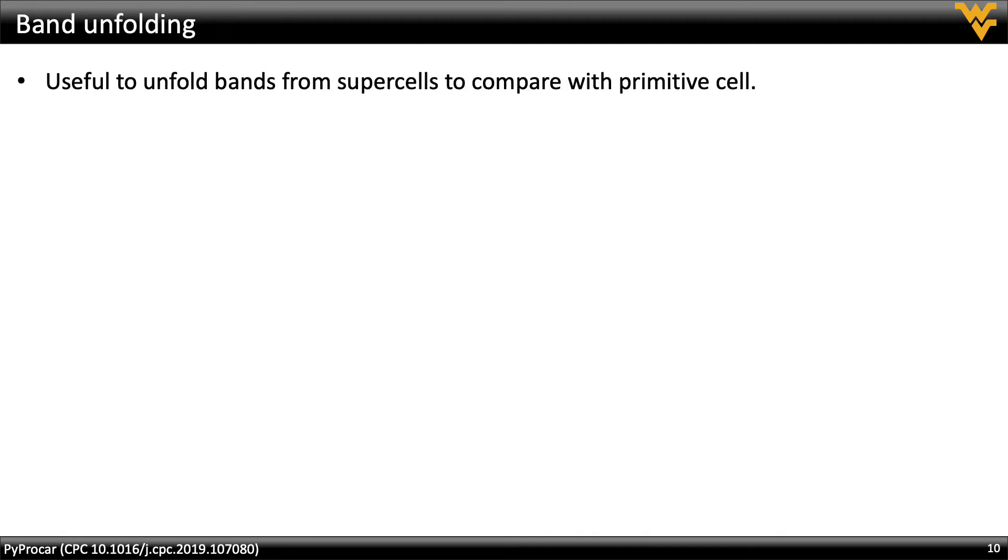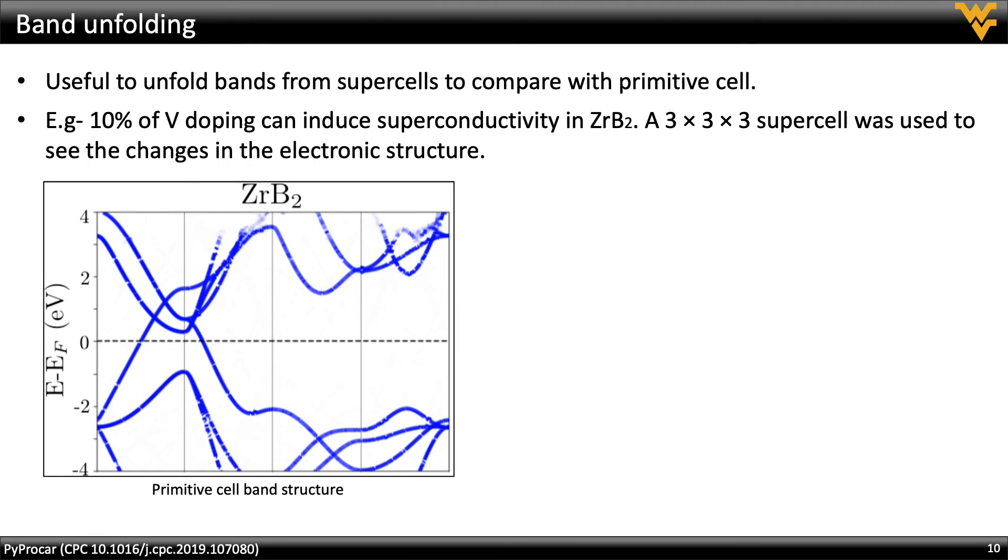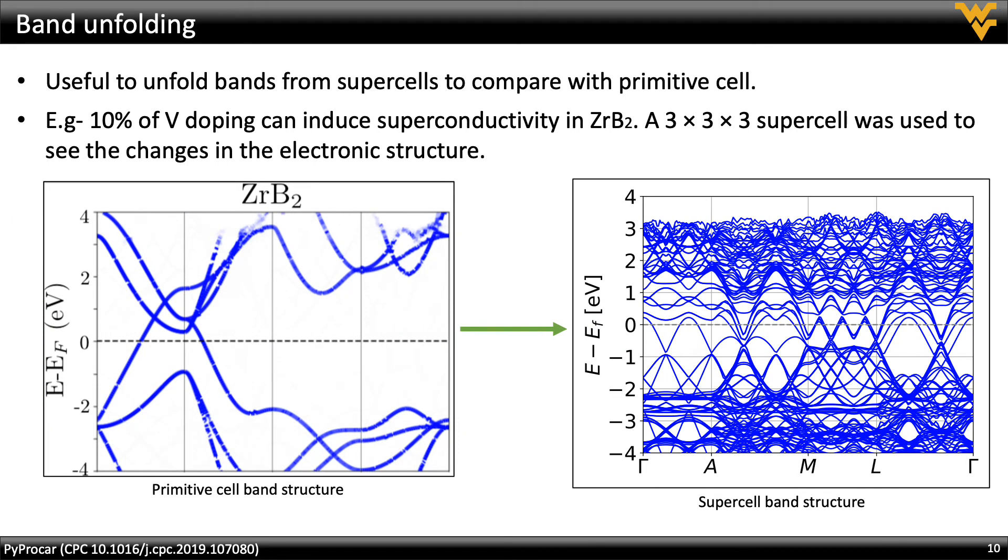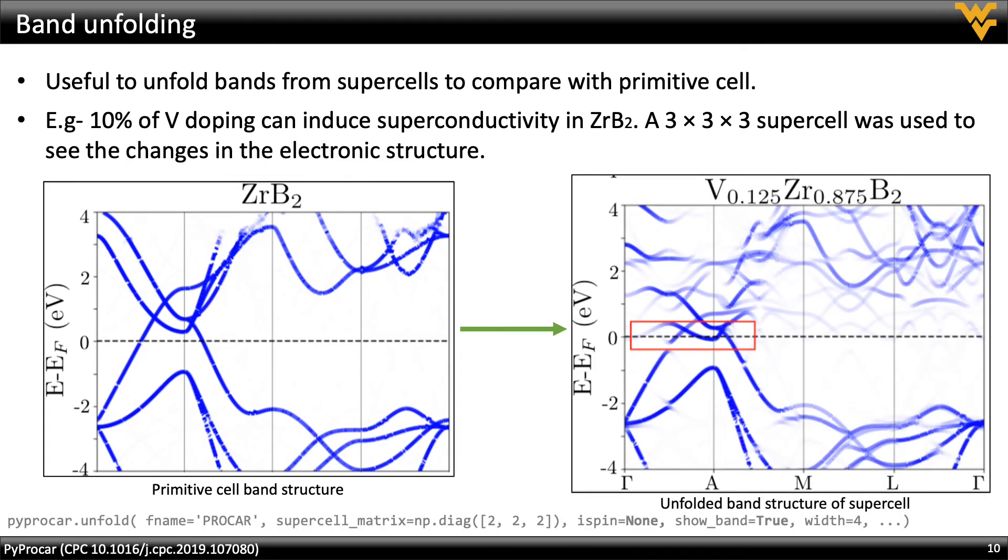The band unfolding feature of PyProCar is useful to analyze band structures of supercells where the bands are convoluted due to the folding of bands as seen here in this figure. Once the bands are unfolded, it is easy to compare the doped band structure with the pristine as shown here in the example of vanadium-doped zirconium diboride.